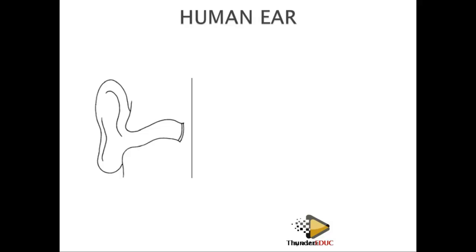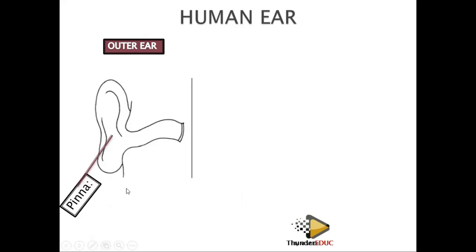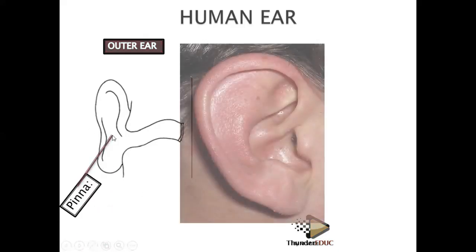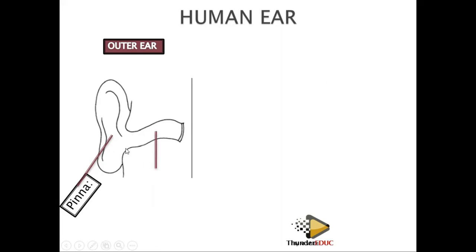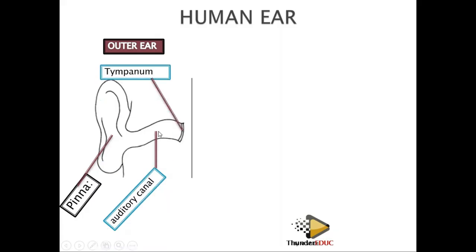The ear is divided into three parts. The outer ear consists of the pinna, which is the fleshy part you see outside. The pinna is connected to the auditory canal, and then there is the tympanic membrane — on your marking we call it tympanic membrane, not eardrum. The pinna collects sounds and sends them to the auditory canal, which brings the sound to the tympanic membrane.